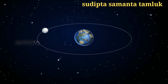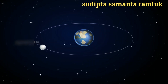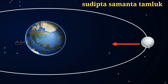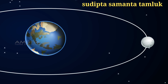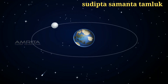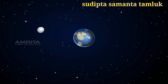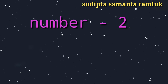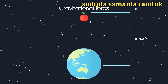The motion of the moon around the earth is due to this centripetal force, which is provided by the gravitational force of attraction of the earth. If there was no such force, the moon would pursue a uniform straight line motion. The gravitational force is the attractive force between any two objects with non-zero mass separated by a distance.